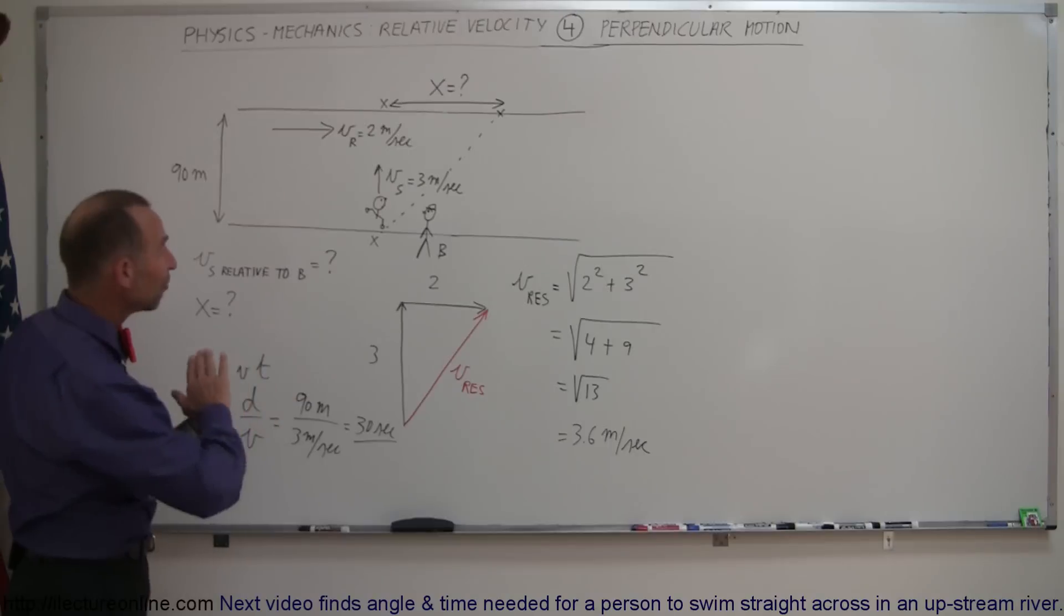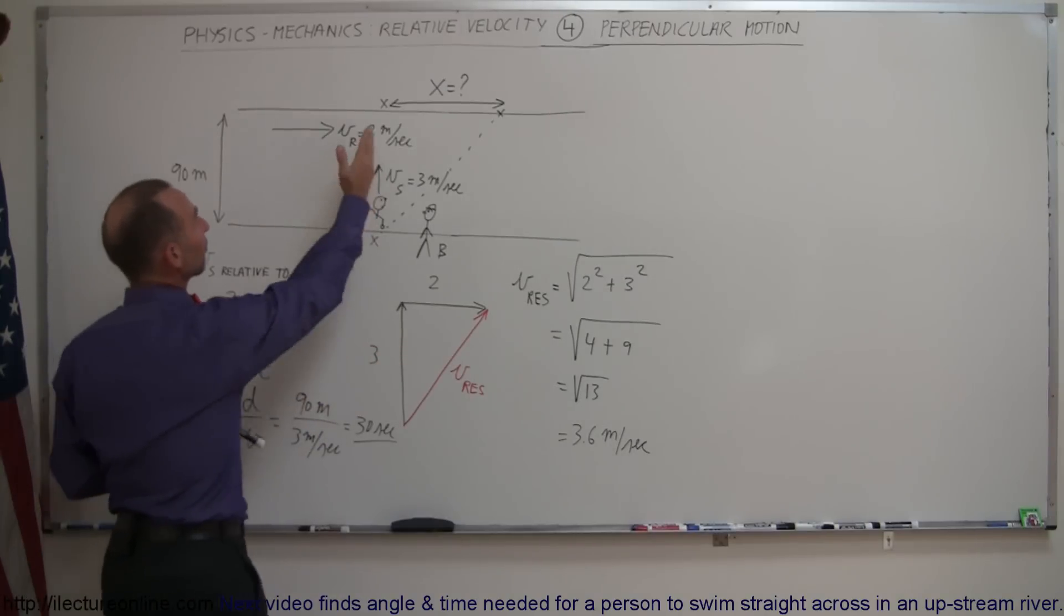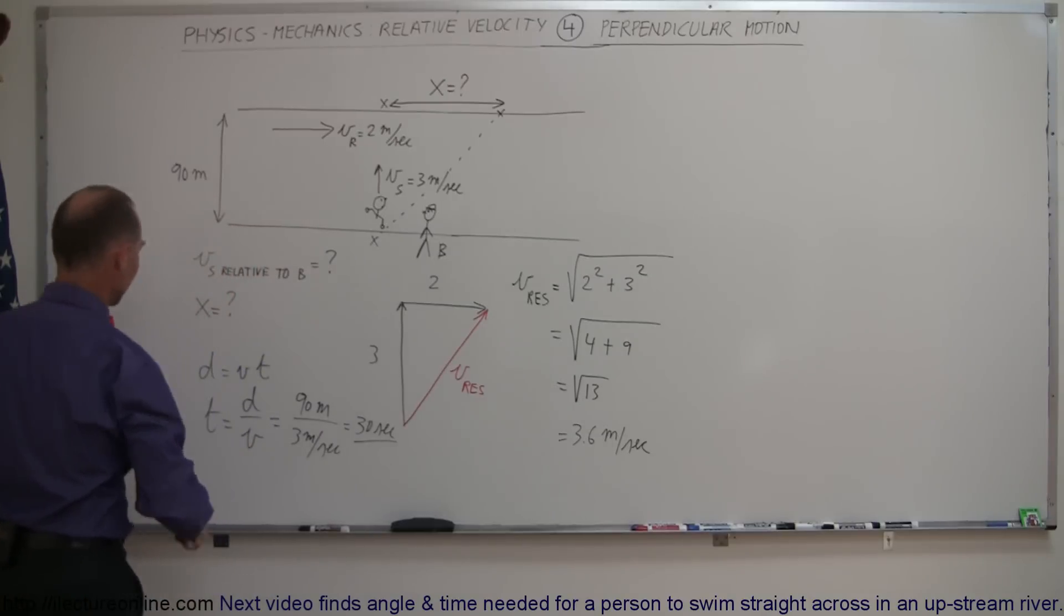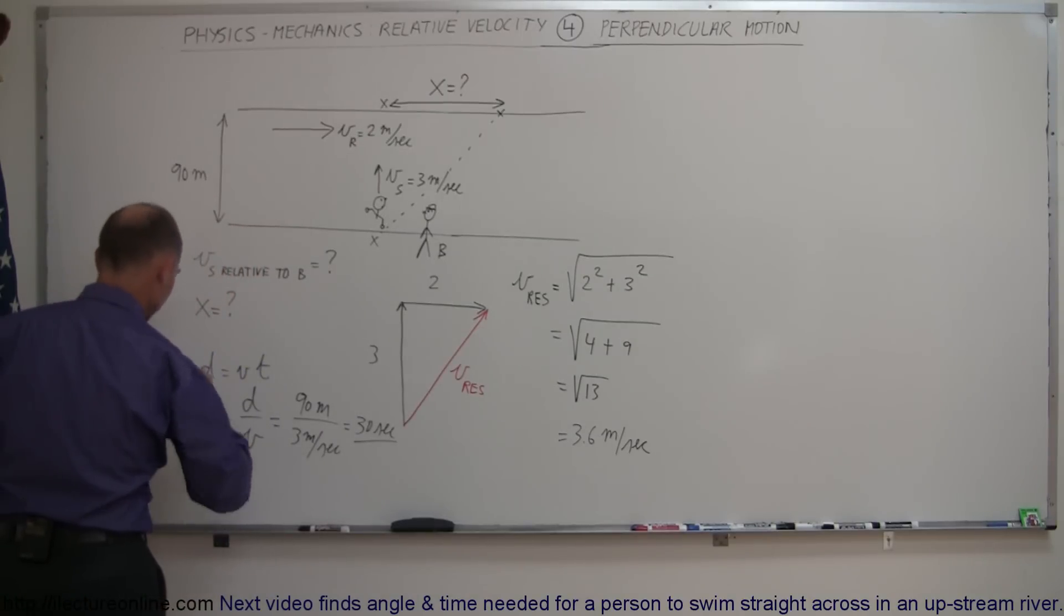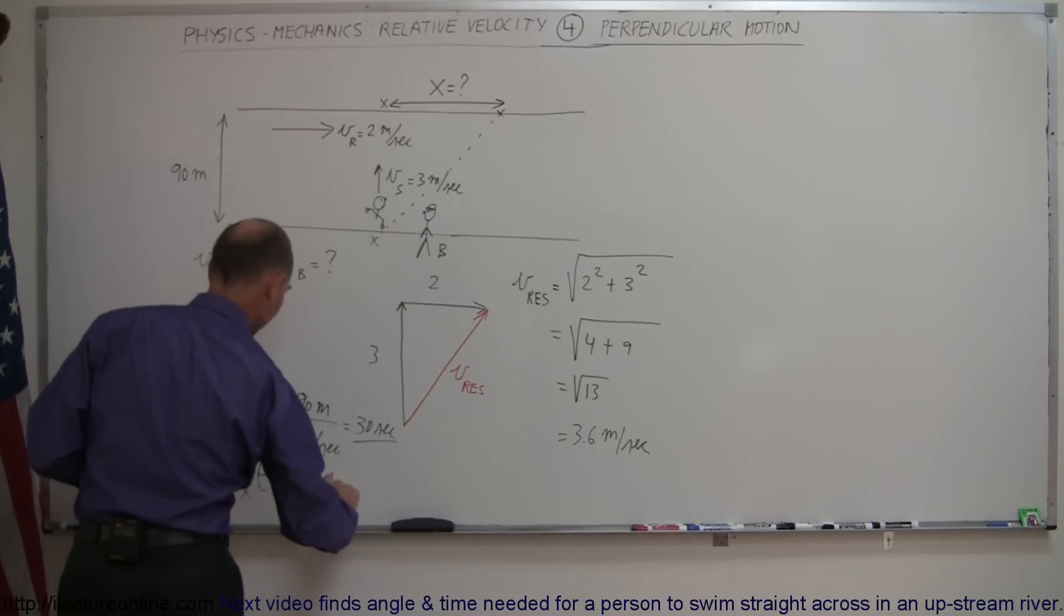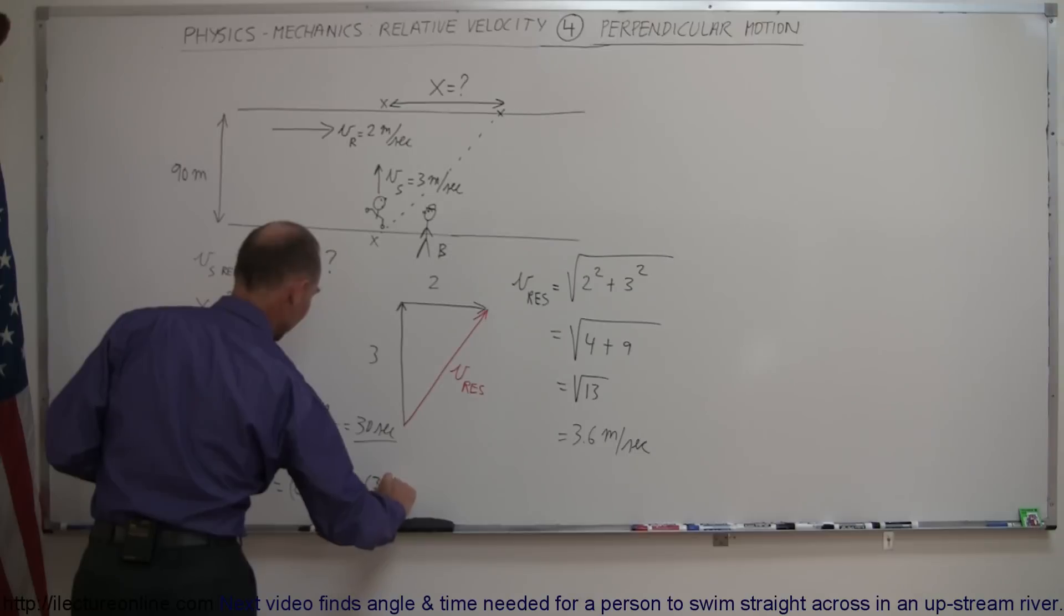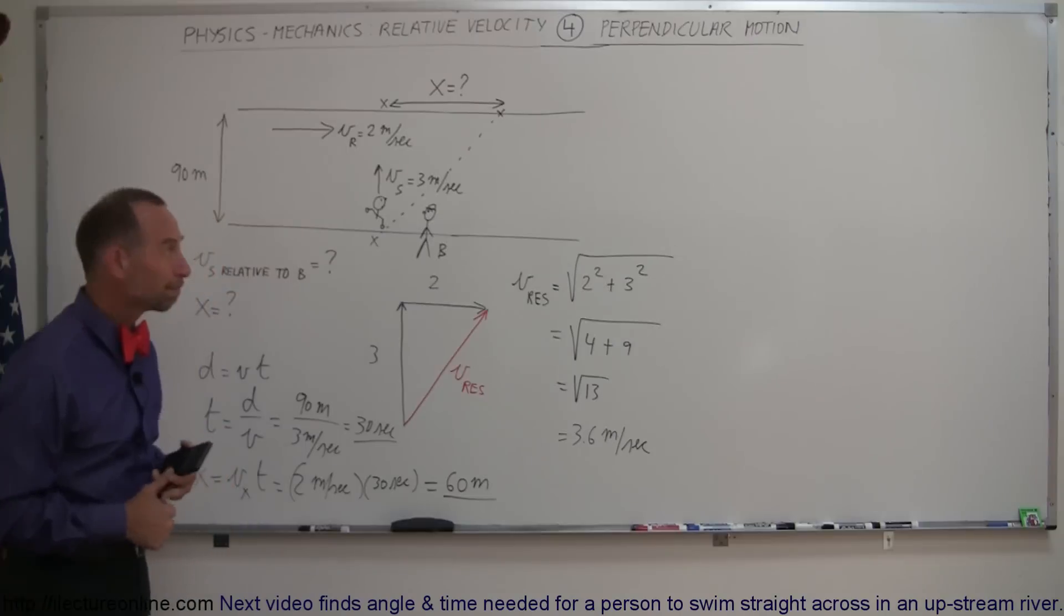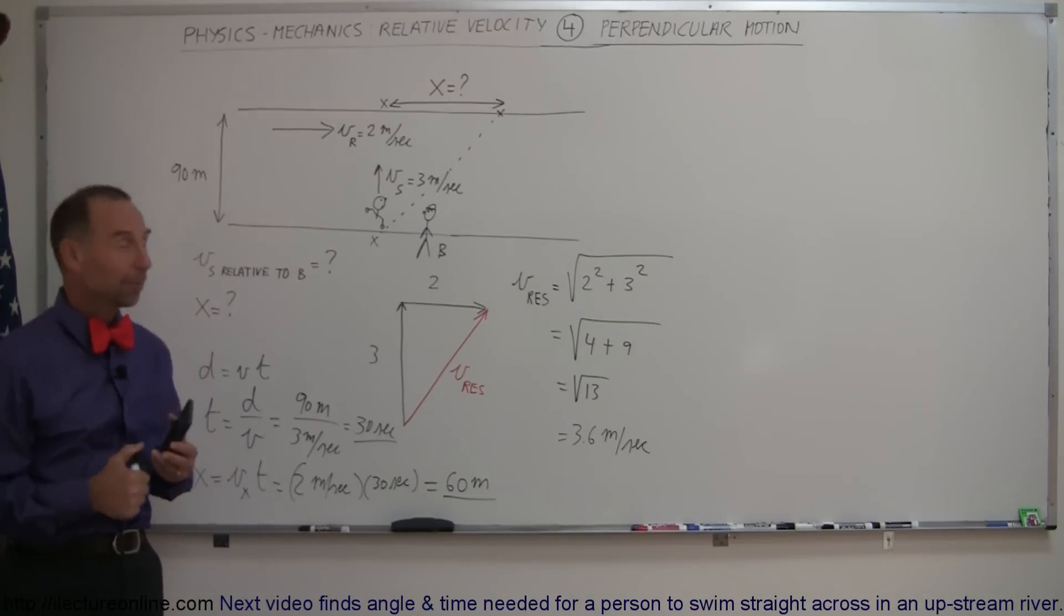Anyway, how far downriver will the river have carried him? That velocity will be 2 meters per second for 30 seconds. So then we can say that x equals velocity in the x direction times time, and so that would be 2 meters per second for a time of 30 seconds. And so that means the river will have carried him 60 meters downstream by the time he gets to the other side. And that's how to do a problem like that.